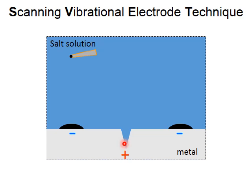The electric field caused by this flux of charged species can be detected spatially by scanning a tiny oscillating electrode above the metal surface. This technique is called the scanning vibrational electrode technique, abbreviated as SVET.